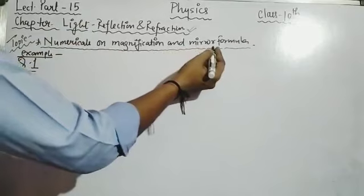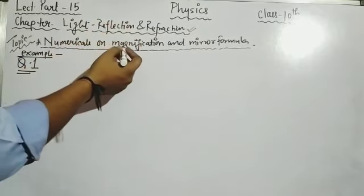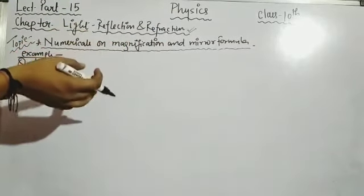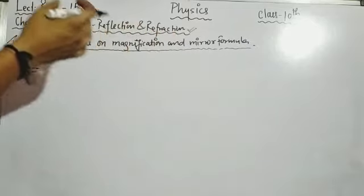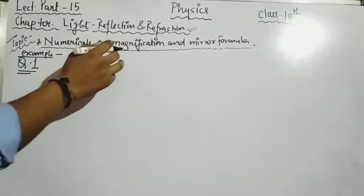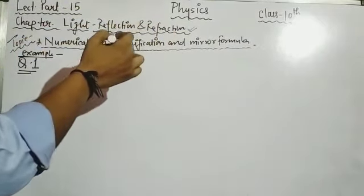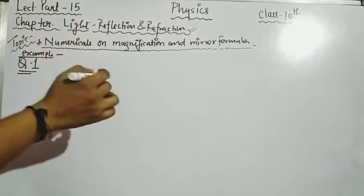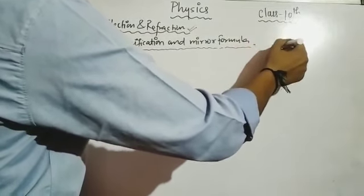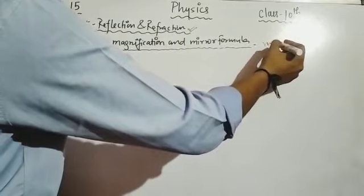We had mirror formula numericals solved before, but now we look at magnification and mirror formula together — how to solve those questions. First of all, you need to know what magnification is and what the mirror formula is. From the previous lectures on magnification, you should recall the formula. Magnification formula: m is equal to hi by ho.